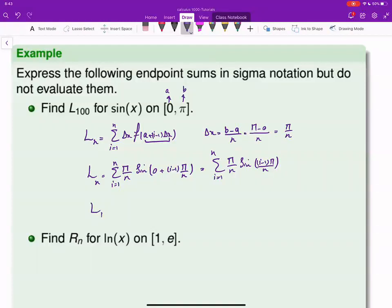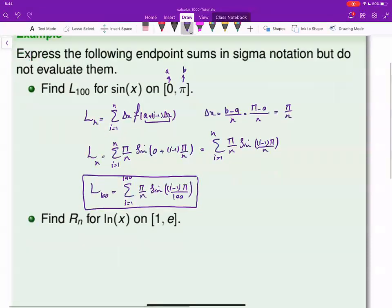And that's what we have for general N. But if you're looking for L_100, it's i going from 1 to 100, π over N sine of (i minus 1)π over 100. And that is the formula we are looking for. We are not interested in evaluating that, which is not easy to do by the way. But the question just asks to express it as the sum.